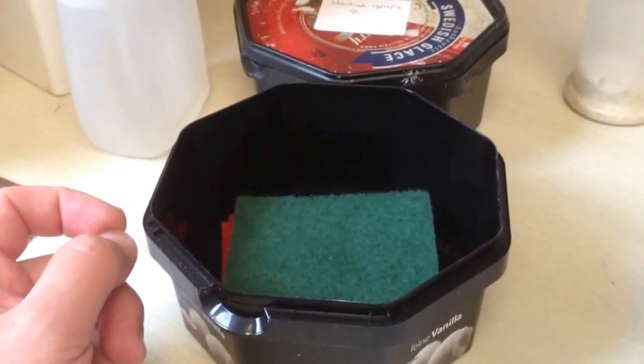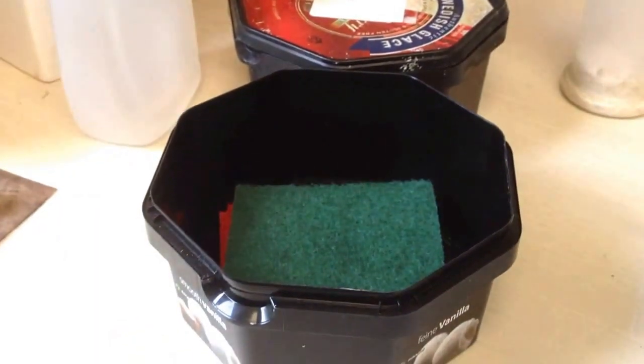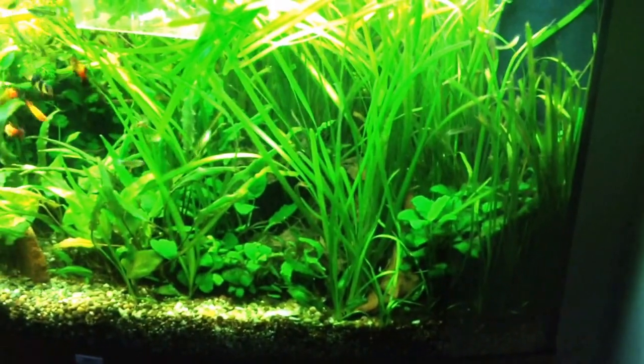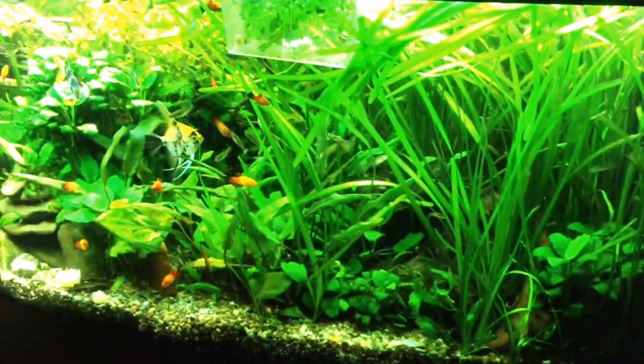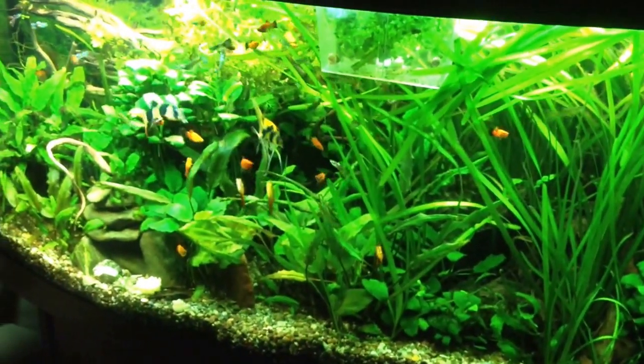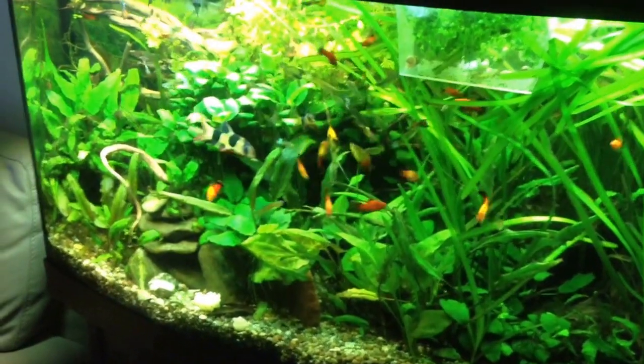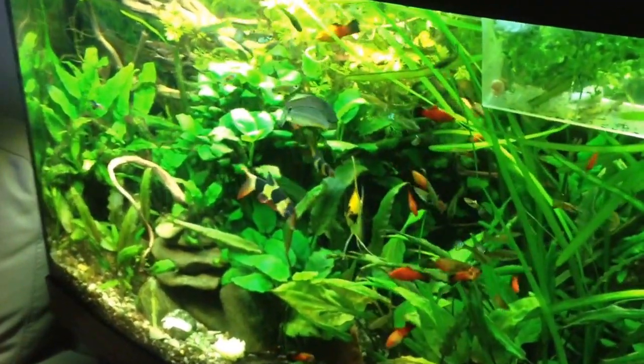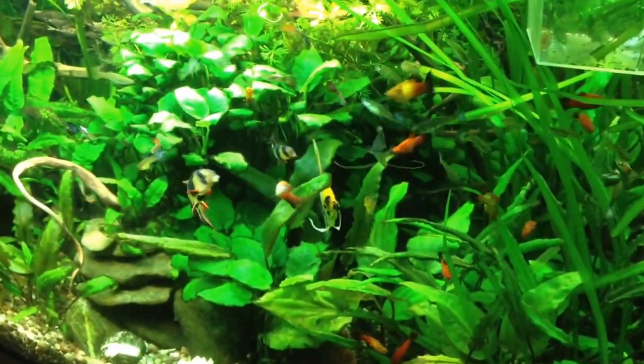So here we have the aquarium. It is a 260-litre tank populated with mainly live bearers including platys, a sawtail or two, and guppies. There's also an angelfish and some clown loaches, and they all seem to be getting on quite well.